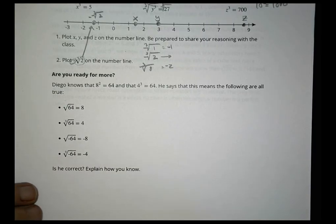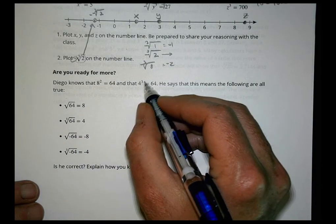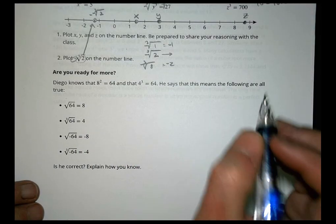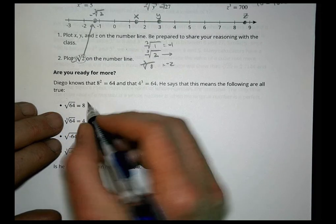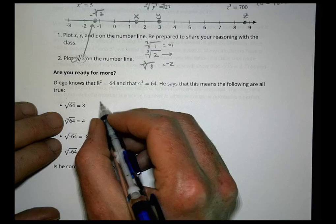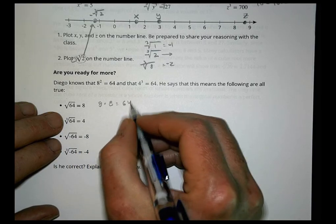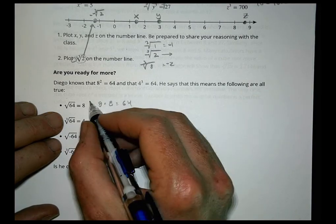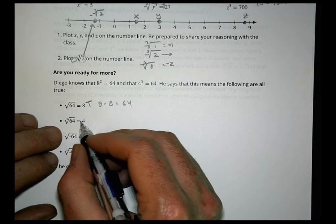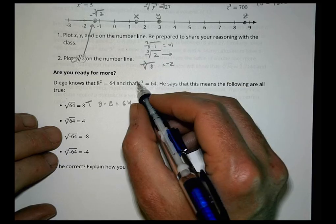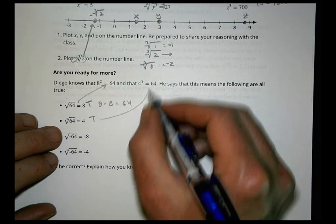Diego knows that 8 squared is 64 and 4 cubed is 64. He says that means the following are all true. Square root of 64 equals 8 — that's true because 8 times 8 is 64. The cube root of 64 is 4 — this is true, we can see it in his statements right there.